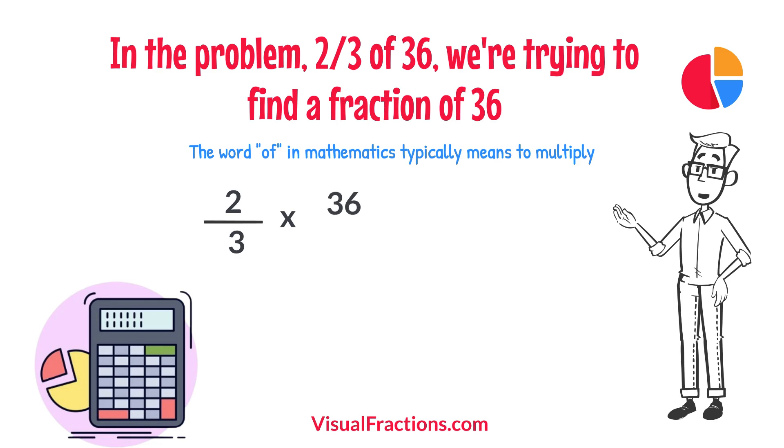Two-thirds times 36. To simplify the calculation, we first convert our whole number into fraction form, writing 36 as 36 over 1. This transformation makes it easier to work with our numbers as fractions.